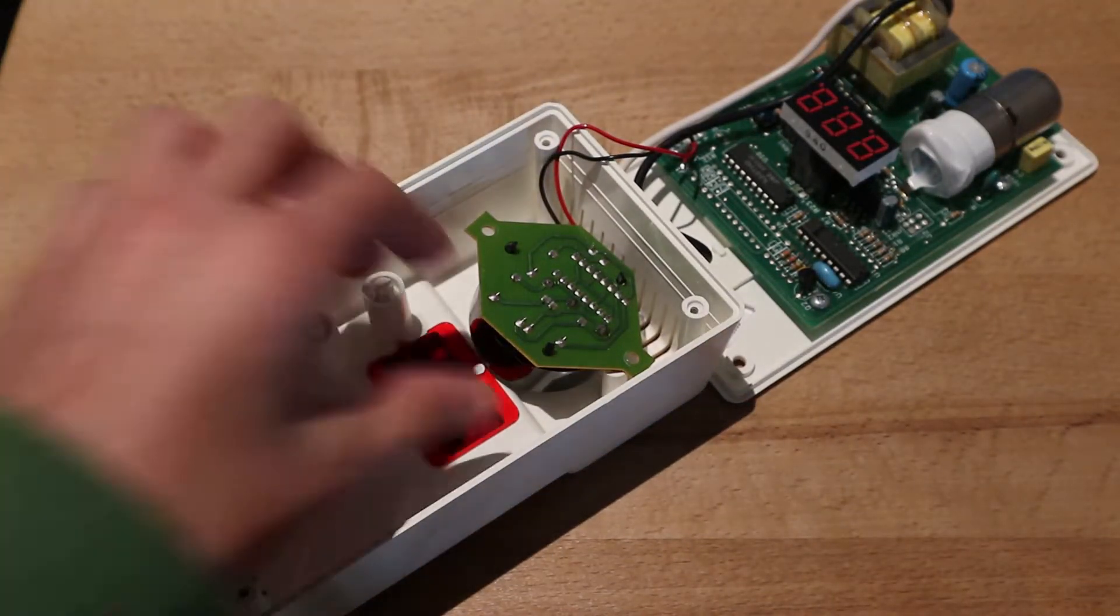And these are the test and peak level buttons. So, this is what's inside of a carbon monoxide alarm.